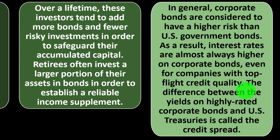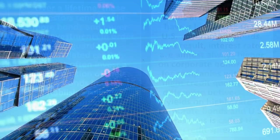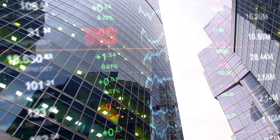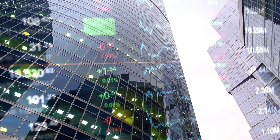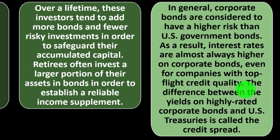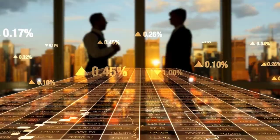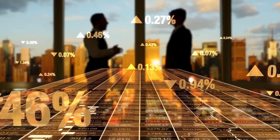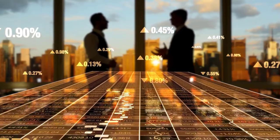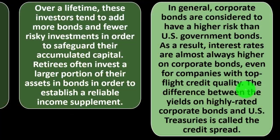Corporate bonds are generally considered to have higher risk than US government bonds. As a result, interest rates are almost always higher on corporate bonds, even for companies with top-flight credit quality. The government has near-zero default risk because they can print money, whereas large corporations — though solid and established — are not nearly zero-risk. With more risk, the market demands a greater return, so corporate bonds must offer higher yields than government bonds to attract investors. The difference between these yields is called the credit spread.